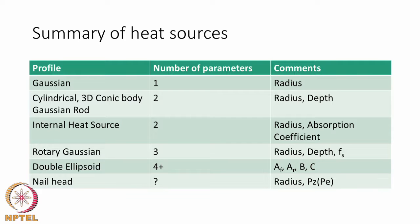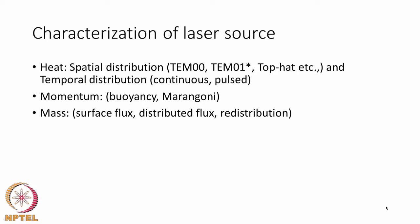For the nail head heat source, the number of unknown parameters depends on the empirically made fit for power absorption as a function of depth — it can be as small as one for a linear profile, or more for a complicated profile. In this summary, we can see the ability to go from a very simple heat source to a very complicated one so that the heat source matches the experimentally known one as closely as possible.